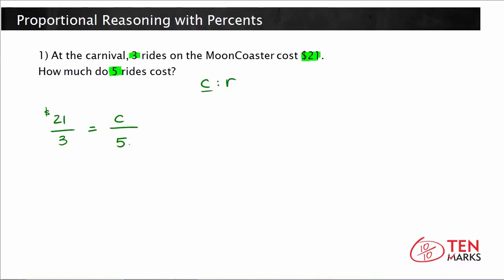What you want to do is use cross multiplication to set up an algebraic equation. Cross multiplication means I would multiply the denominator by the numerator in the opposite fraction, and do the same thing on this side. So, I get the cross products of 21 times 5 equals 3 times C. Because I want to find C, or the cost for five rides, I'm going to isolate this variable by dividing both sides by three.